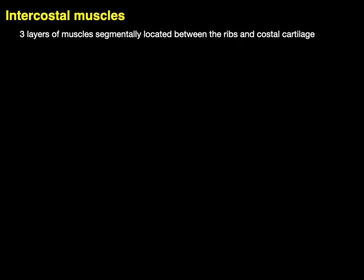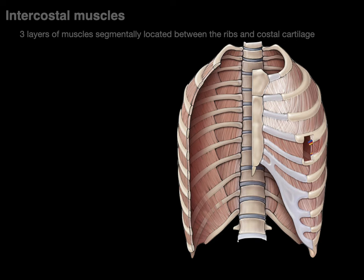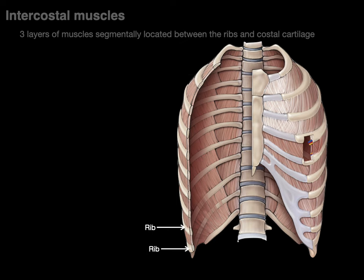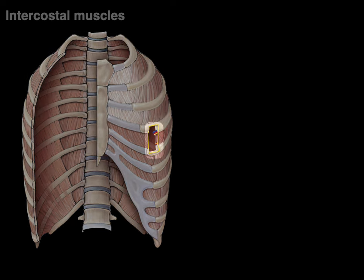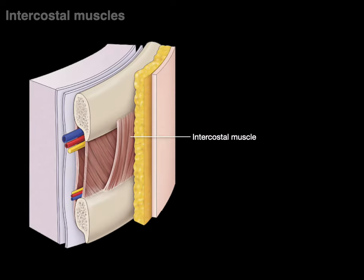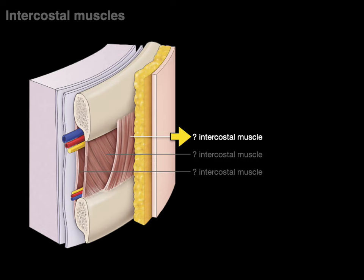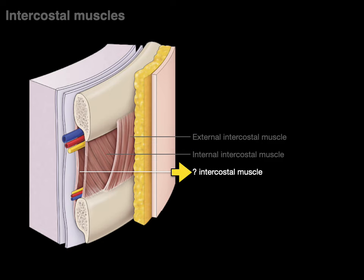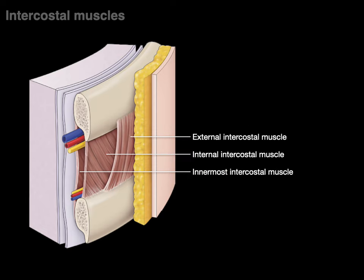There are three layers of intercostal muscles: the most external is called the external intercostal, the one deep to it is the internal intercostal, and the deepest is the innermost intercostal muscle. They all attach along the inferior and superior border of adjacent ribs.